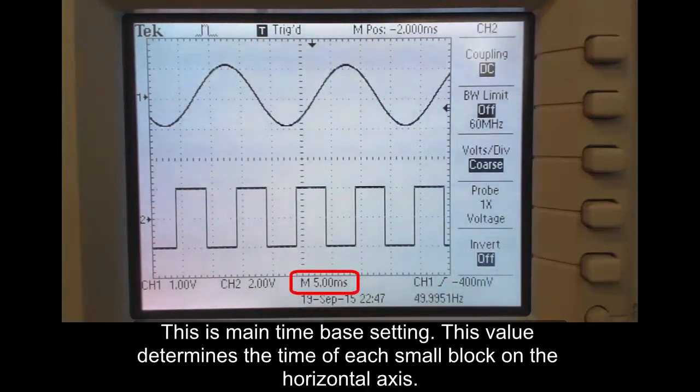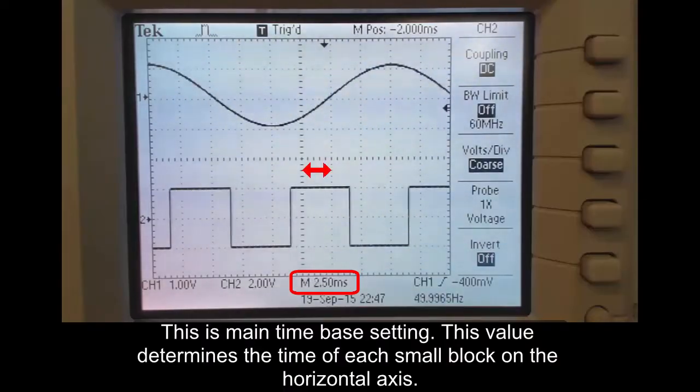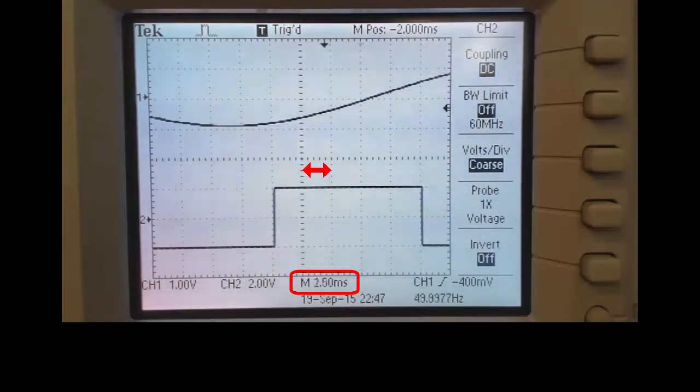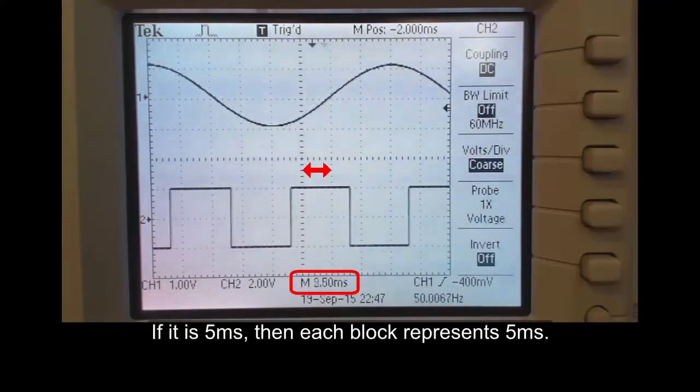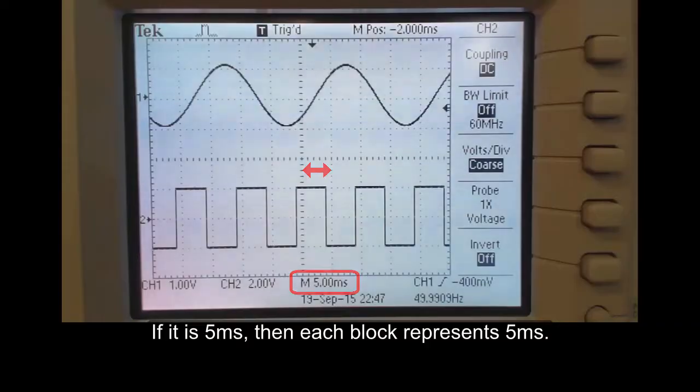This is the main time based setting. This value determines the time of each small block on the horizontal axis. If it is set to 5 ms then each block represents 5 ms.